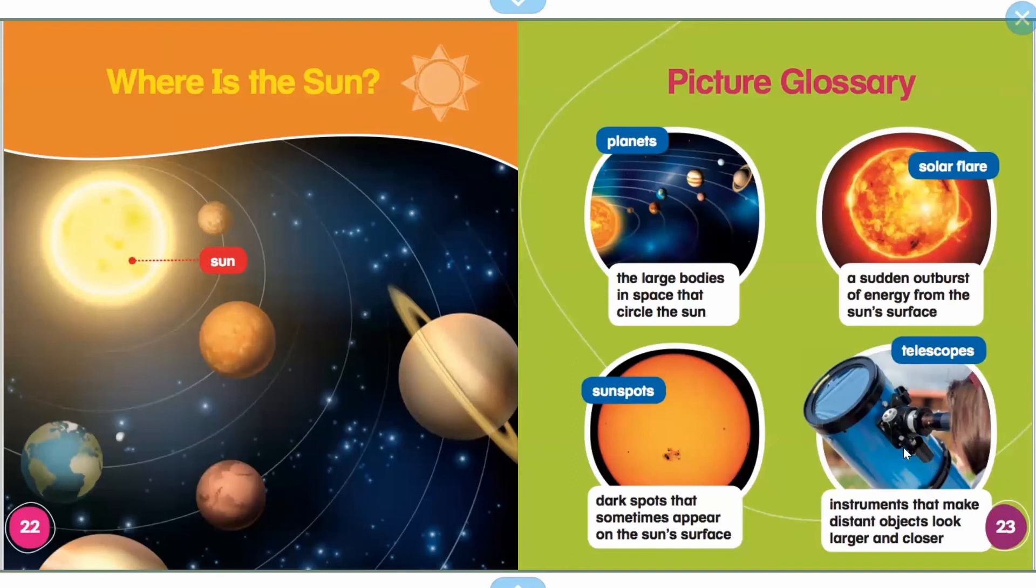Look, remember that tool we talked about that scientists use called a telescope? A telescope is an instrument that makes distant objects or objects that are super far away look larger and closer. That helps us get a better look at them. Kind of like when you guys use the magnifying glasses in class, right?